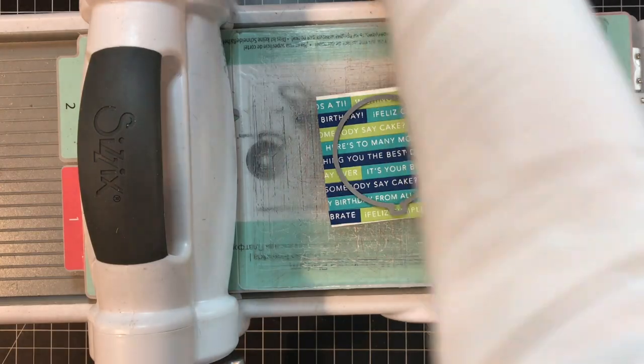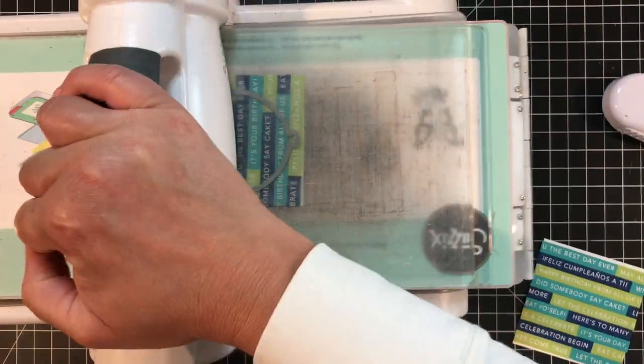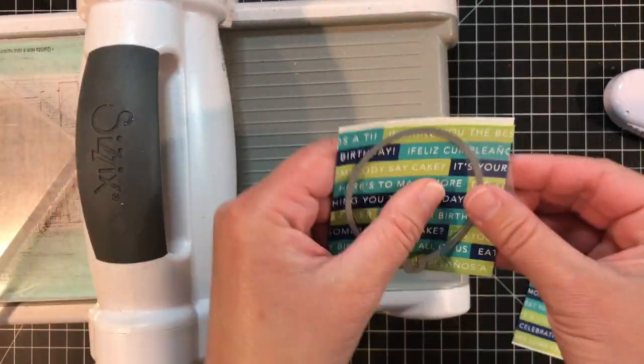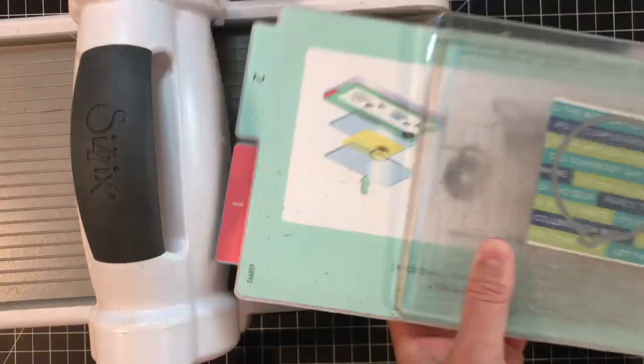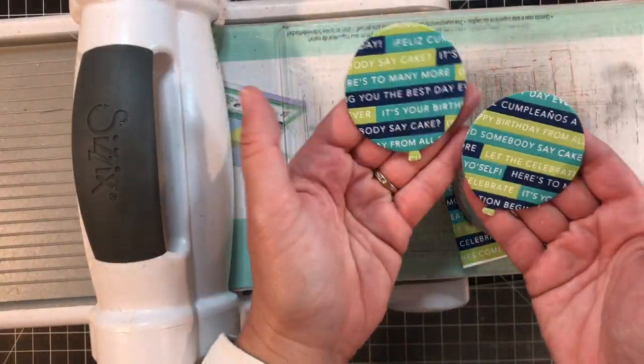I'll take each of the squares that I just put together with the simple strips and I'll die cut the balloon which is part of the celebrate big balloon shaker die collection and I'll die cut a balloon from each of the pieces.